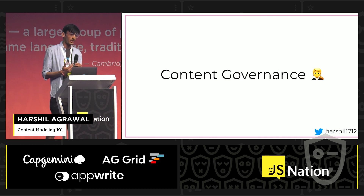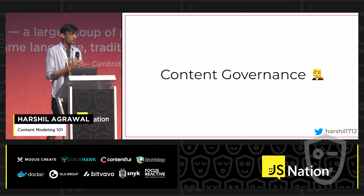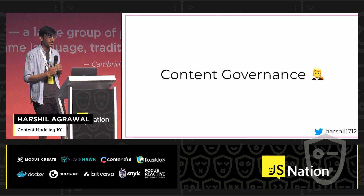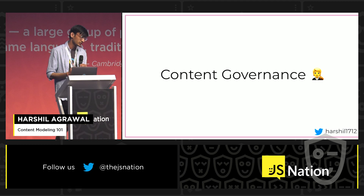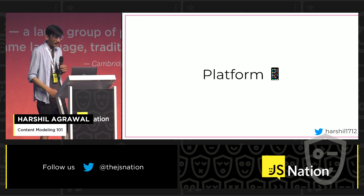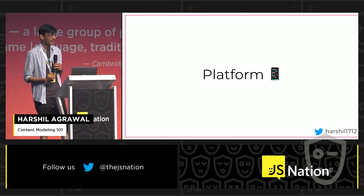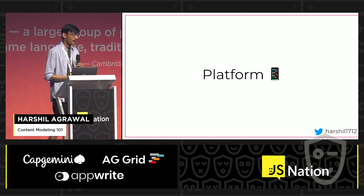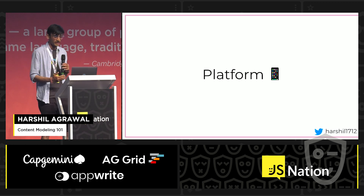A content model does not just store content — it also embodies decisions about how you want to render content for the end user, and how your team should publish and display it. We refer to this constellation of issues as content governance. You also need to think about the platform: where and how will users interact with your content? Is it just on the web? Are you building a mobile application? Or will users get this information on a voice-enabled application?